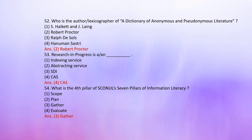Number 52: Who is the author/lexicographer of the Dictionary of Anonymous and Pseudonymous Literature? Options: 1. S. Halkett and J. Lane, 2. Robert Proctor, 3. Ralph D. Souls, 4. Hanuman Shastri. The correct answer is 2: Robert Proctor.